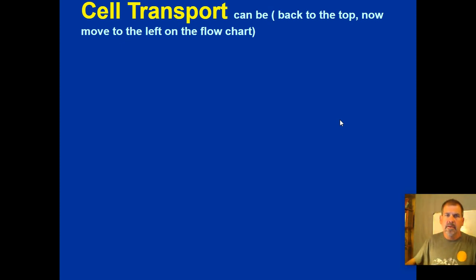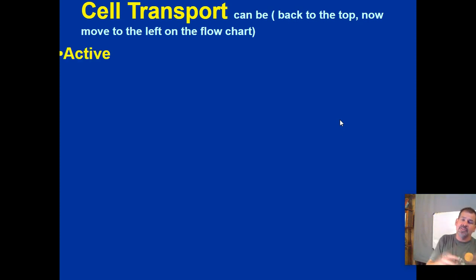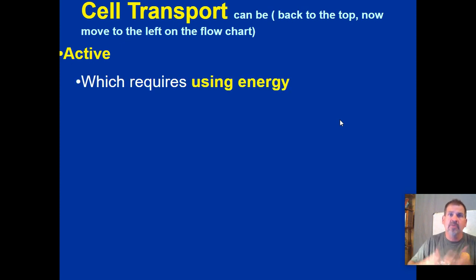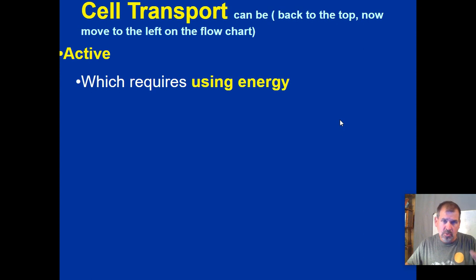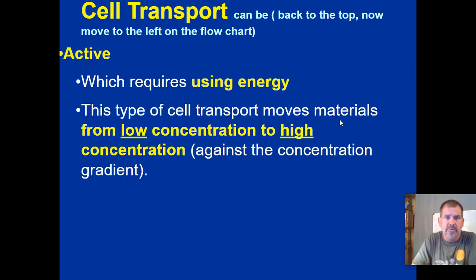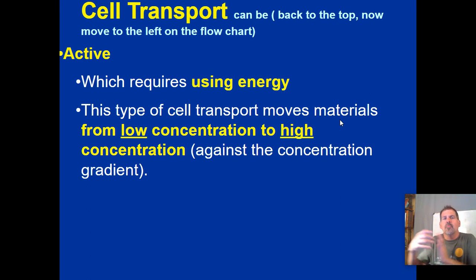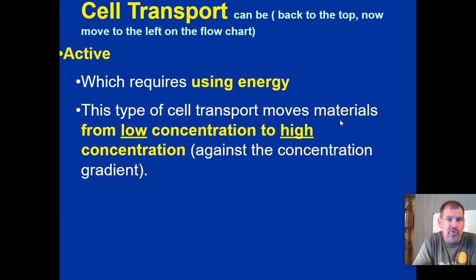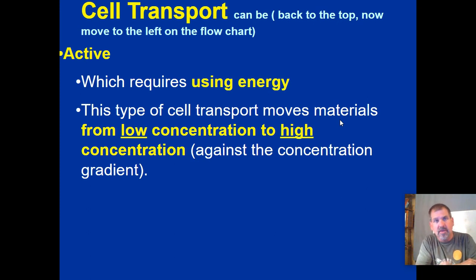Now moving to the left side of the flowchart: cell transport can also be active, which is the opposite of passive. Active transport requires energy — specifically burning calories. This type of transport moves materials from low concentration to high concentration, going from less crowded to more crowded. This is sometimes called going against the concentration gradient, because particles naturally want to go from more crowded to less crowded.